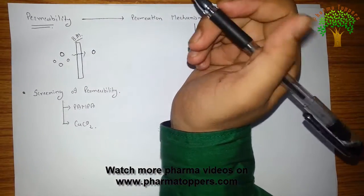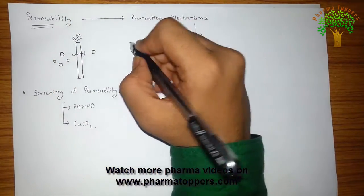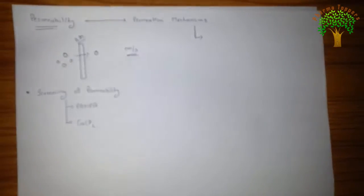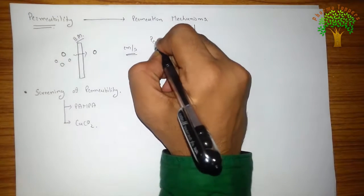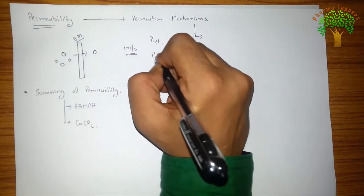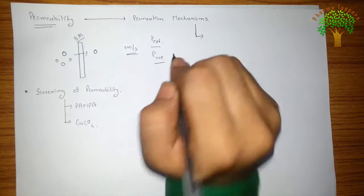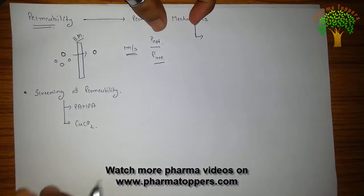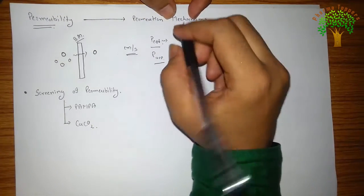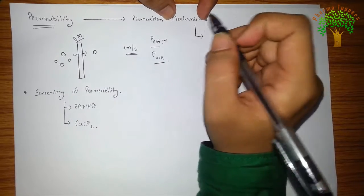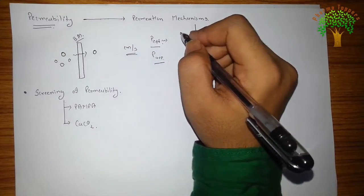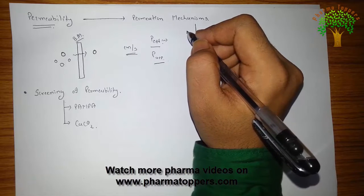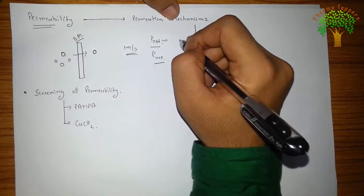Permeability is generally expressed in cm per second and there are two terms: P-efficient and P-apparent, efficient permeability and apparent permeability. The main difference between these two terms is that in case of efficient permeability, we don't consider any type of the cell or whatever activity happening in the cell. It is the in-situ permeability, so the metabolism of the membrane and the efflux transportation, these all are not considered.